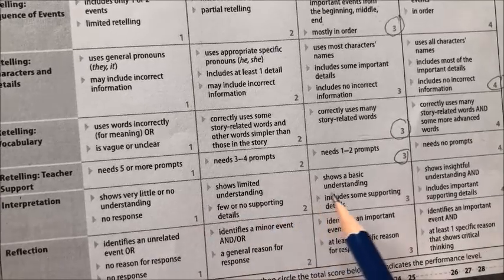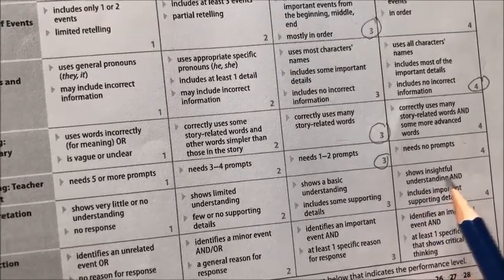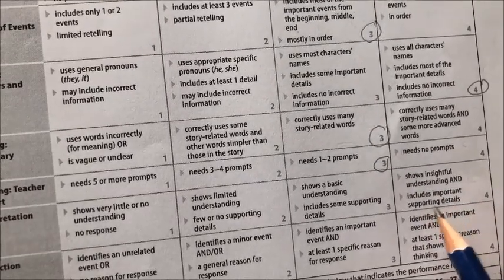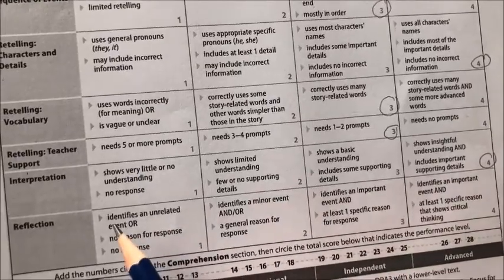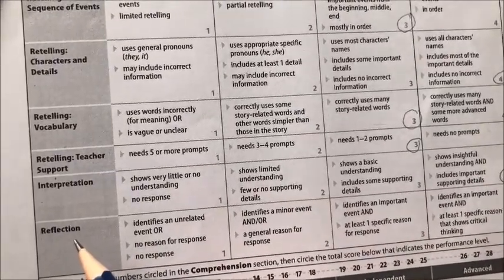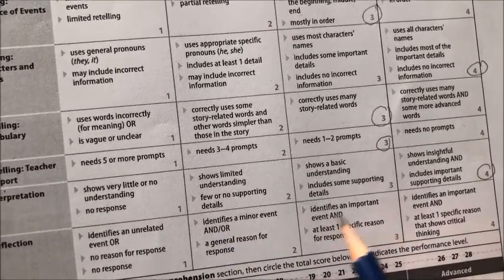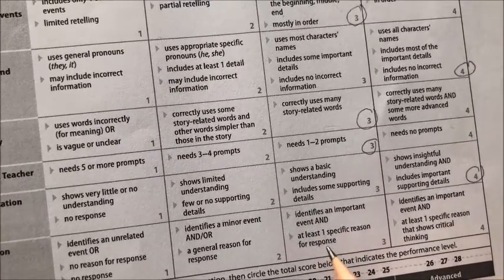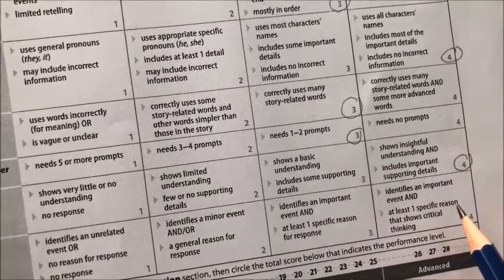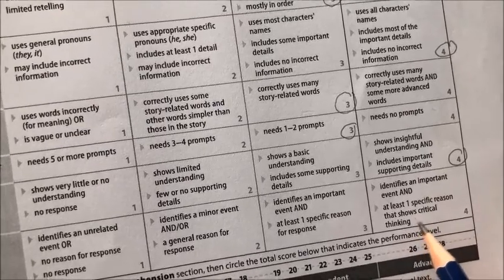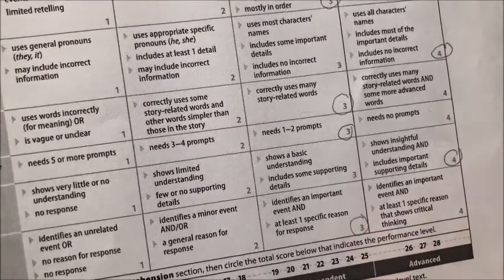Under interpretation, this student shows insightful understanding and includes important supporting details, so I'm going to circle the four here. Under reflection, independent identifies an important event and at least one specific reason for response. Advanced identifies an important event and at least one specific reason that shows critical thinking. I don't think she's there yet, so I'm going to circle the independent box for this one.